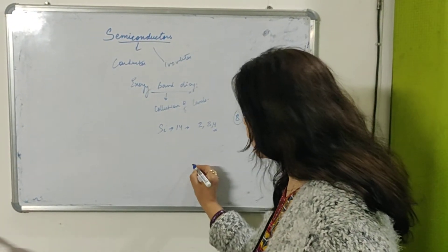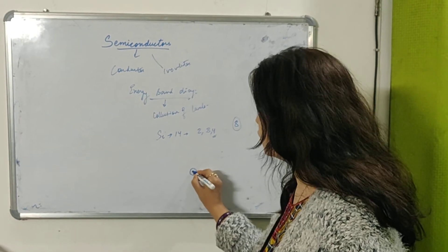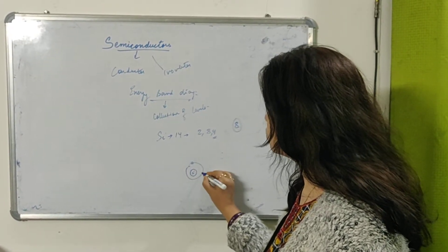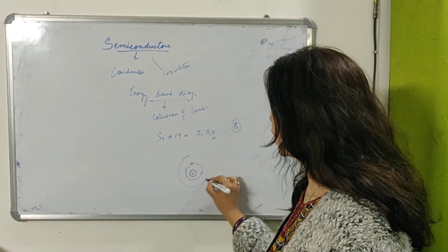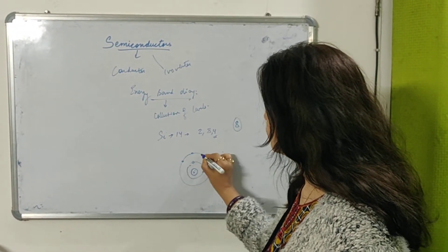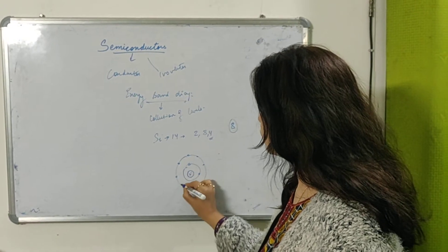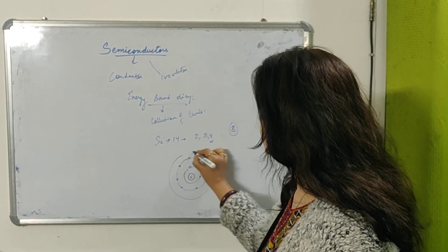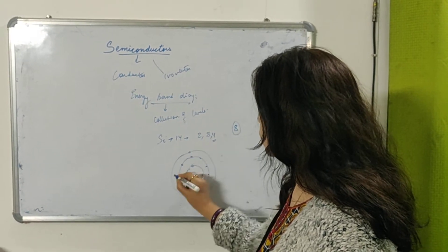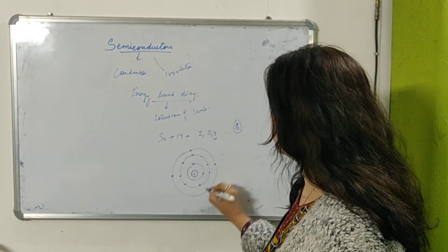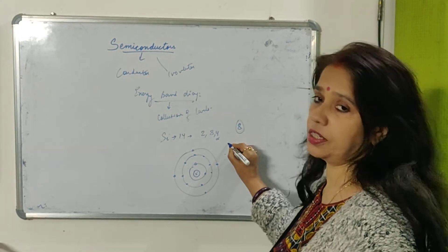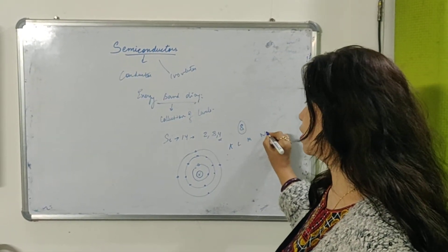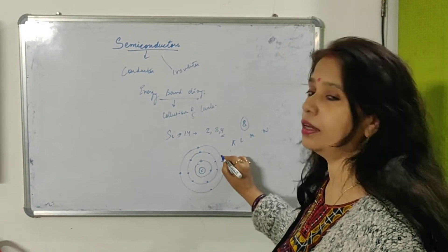Now if I take the nucleus over here of silicon, first orbit contains 2 electrons, second orbit contains 8, and the third orbit contains 4. You must be knowing, you must have studied in chemistry about K, L, M, N shells. Here, K, L and M shells.